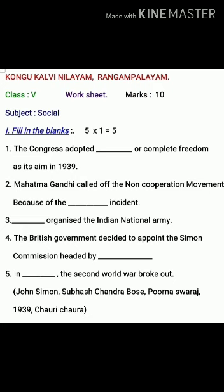First question: The Congress adapted ___ of complete freedom as its aim in 1939. Second one: Mahatma Gandhi called off the non-cooperation movement because of the ___ incident.